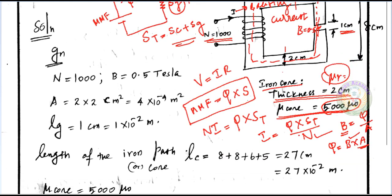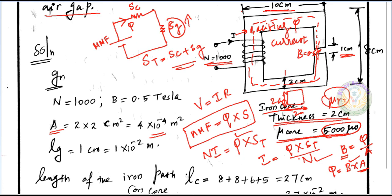To find flux, we need the cross-sectional area. Using the cross-section dimensions — thickness is 2 cm and width is 2 cm — the cross-sectional area is 2 × 2 = 4 cm², which is 4 × 10⁻⁴ m². This is a 3-dimensional core, and cutting the cross-sectional area gives us 4 × 10⁻⁴ m².